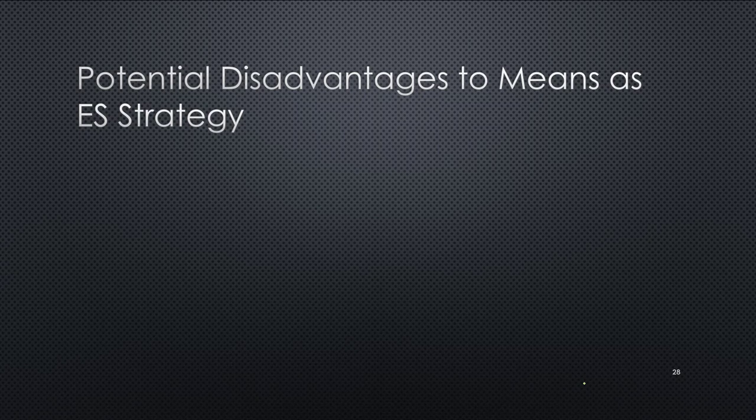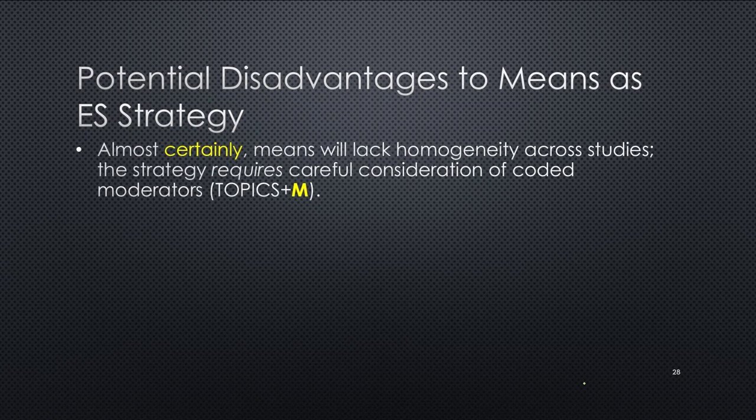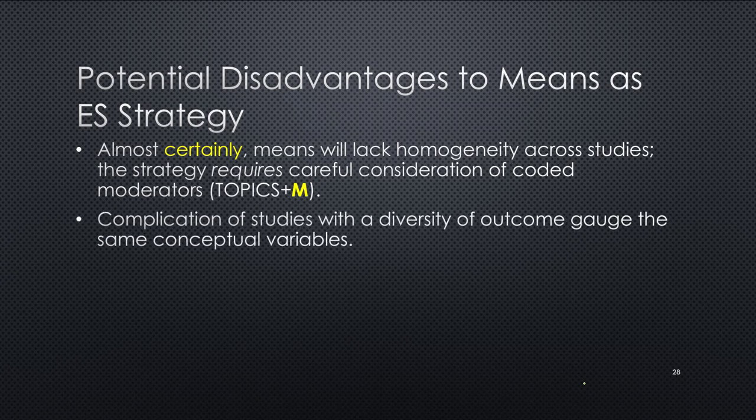Now, there are some potential disadvantages to means as an effect size strategy. So as I showed you, almost certainly means will lack homogeneity across studies. So it requires careful consideration of coded moderators. Think about the moderators or things that could relate to social dominance or whatever your independent variable is. And then there's going to be complications when there are diversity of outcome measures that are measuring the various same conceptual variables. You've got to worry about the equivalency of converting these things into one effect size and do sensitivity analyses.